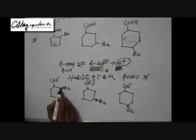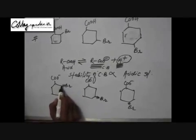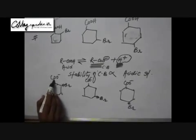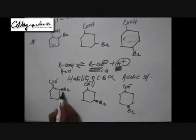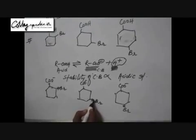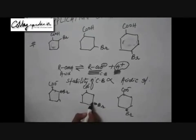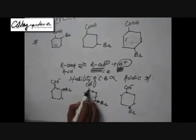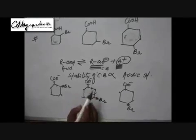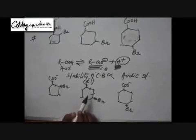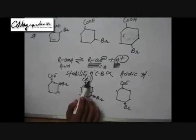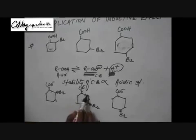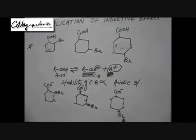If bromine is at the ortho position, it pulls electrons by the inductive effect from the adjacent bond; that carbon in turn pulls from the next bond, and so on until the electrons are pulled from the carboxylate group. If bromine is at the meta position, it pulls electrons through a chain of four bonds before finally pulling from the carboxylate ion. The inductive effect becomes very weak after the third carbon, and in the meta position, bromine is exactly at the third carbon.